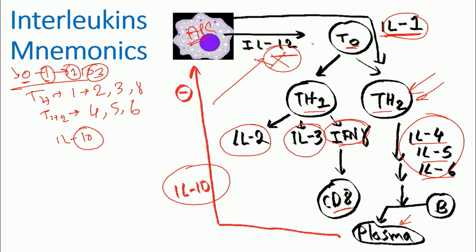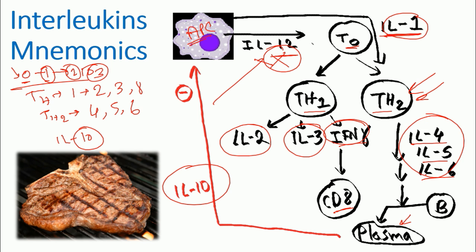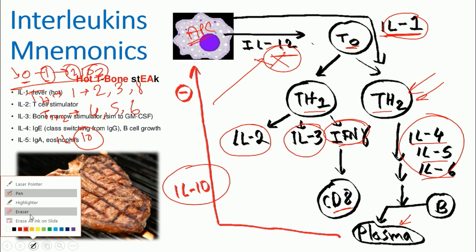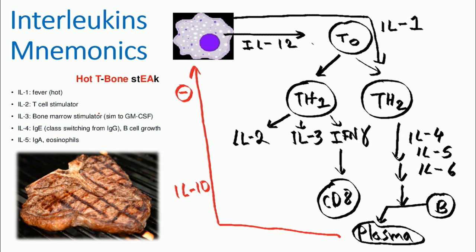Now how to remember the function of all those interleukins? You need to remember hot T bone stick. So when you talk about hot T bone stick, what we mean? So now if you look at here hot T bone stick, letters which are written in red are the one that you need to follow. For example hot, interleukin 1. So it starts with interleukin 1 which is hot. Hot means fever, so interleukin 1 causes fever.